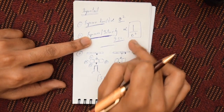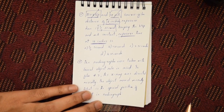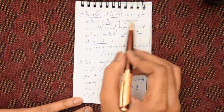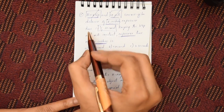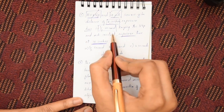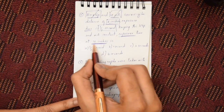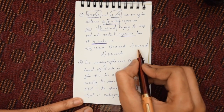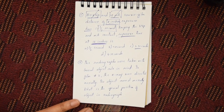Reading the question once more: 80 kVp and 15 mA, source film distance of 8 inches, exposure time is half a second; keeping kVp and mA constant, what is the exposure time at 16 inches? The answer is two seconds.